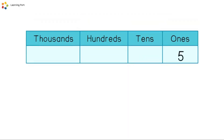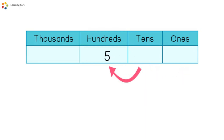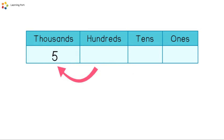Digit five at ones has a value of five. When it enters the house of tens, the value of five is fifty. When it enters the house of hundreds, the value of five becomes five hundred. When it enters the house of thousands, the value changes to five thousand.